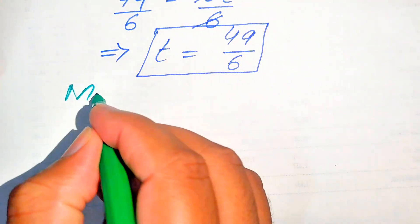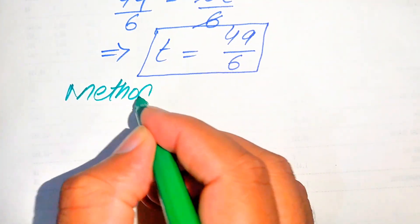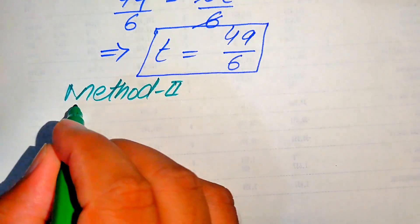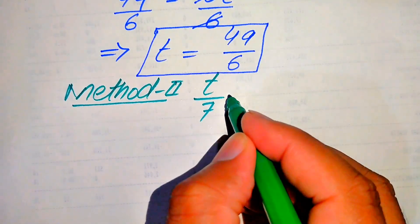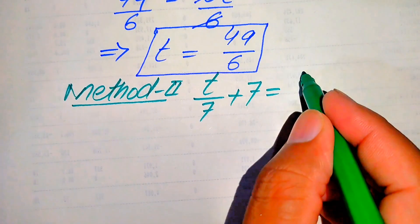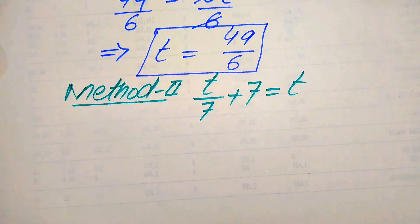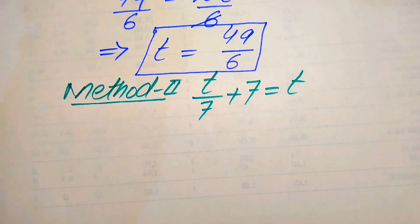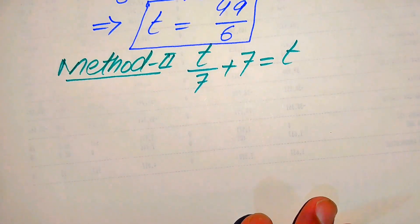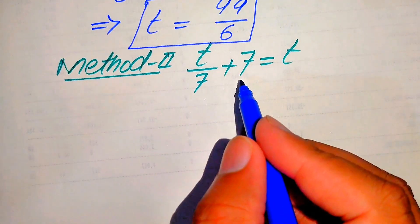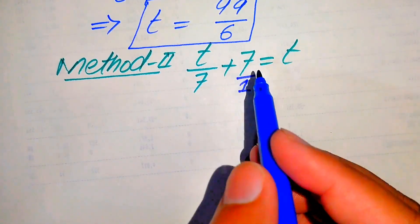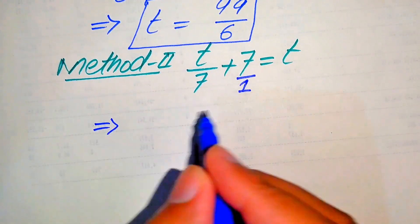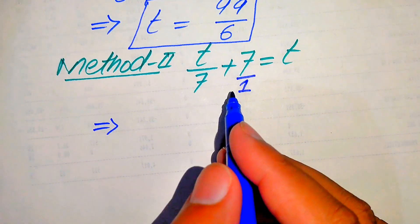In the second method we copy down the given question statement: t over 7 plus 7 equals t. We solve this problem with the help of LCM. The denominator of the second term is 1, and we need to make the denominators of both terms the same.